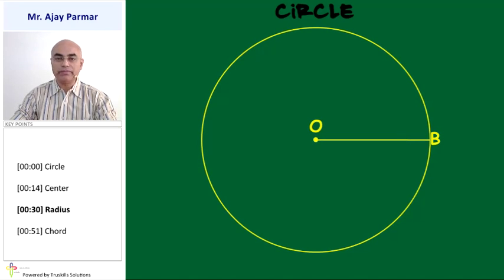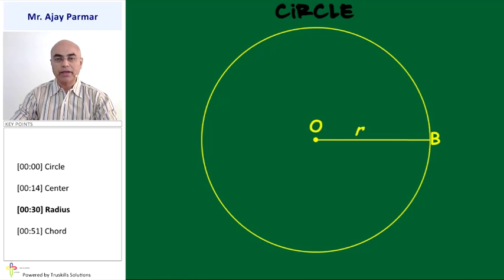In general terms, we can say that OB — that is, the distance OB — is the radius of the given circle, which is represented by small r.